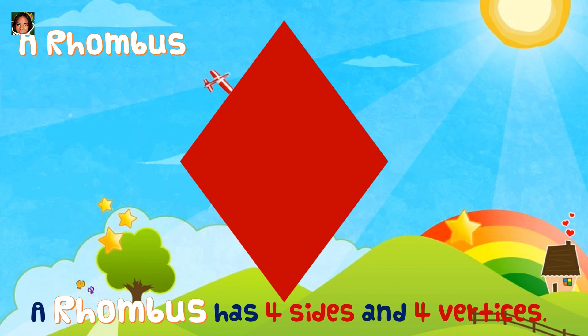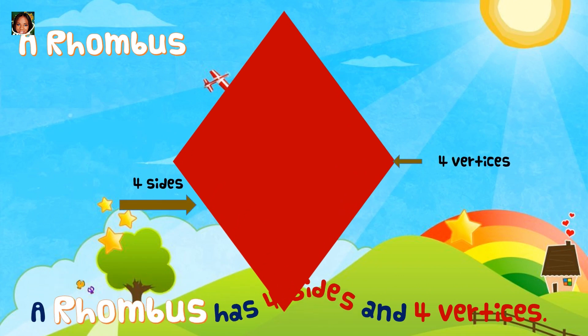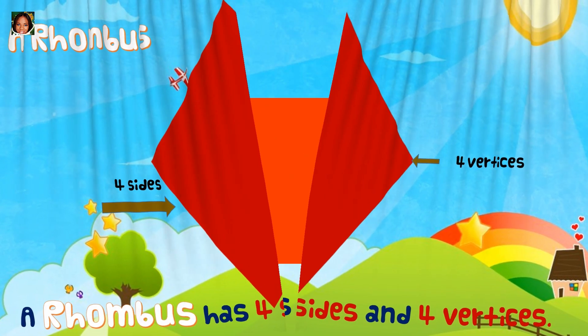Rhombus. A rhombus has four sides and four vertices.